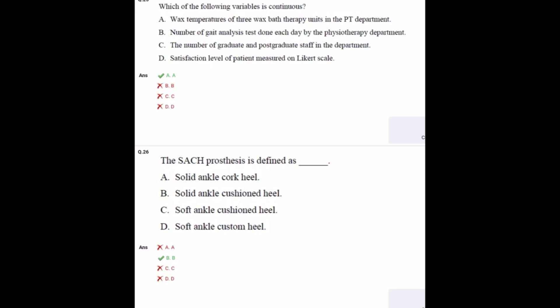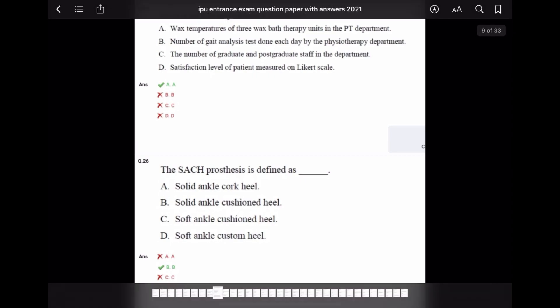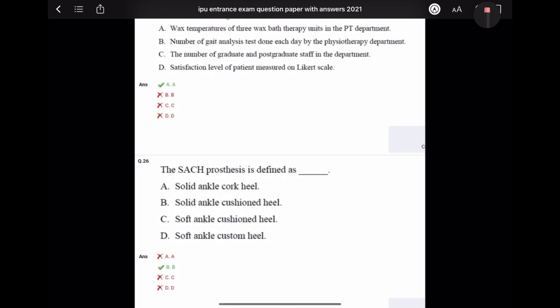Continuous means same. Temperature in the PT department will be almost the same, but number of gait analyses will be different - circumductory gait, scissoring gait, spastic gait - all different. Number of graduates and postgraduates can be different, and satisfaction level can be different. So the continuous variable is A, wax bath temperature.